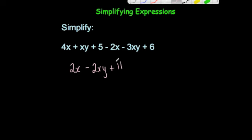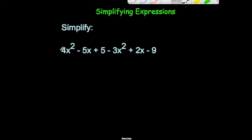In our next example we've got 4x squared minus 5x plus 5 subtract 3x squared plus 2x minus 9. Our like terms are x squareds, x's, and our numbers. Starting with the x squareds: 4x squared take away 3x squared would be 1x squared, or just x squared.